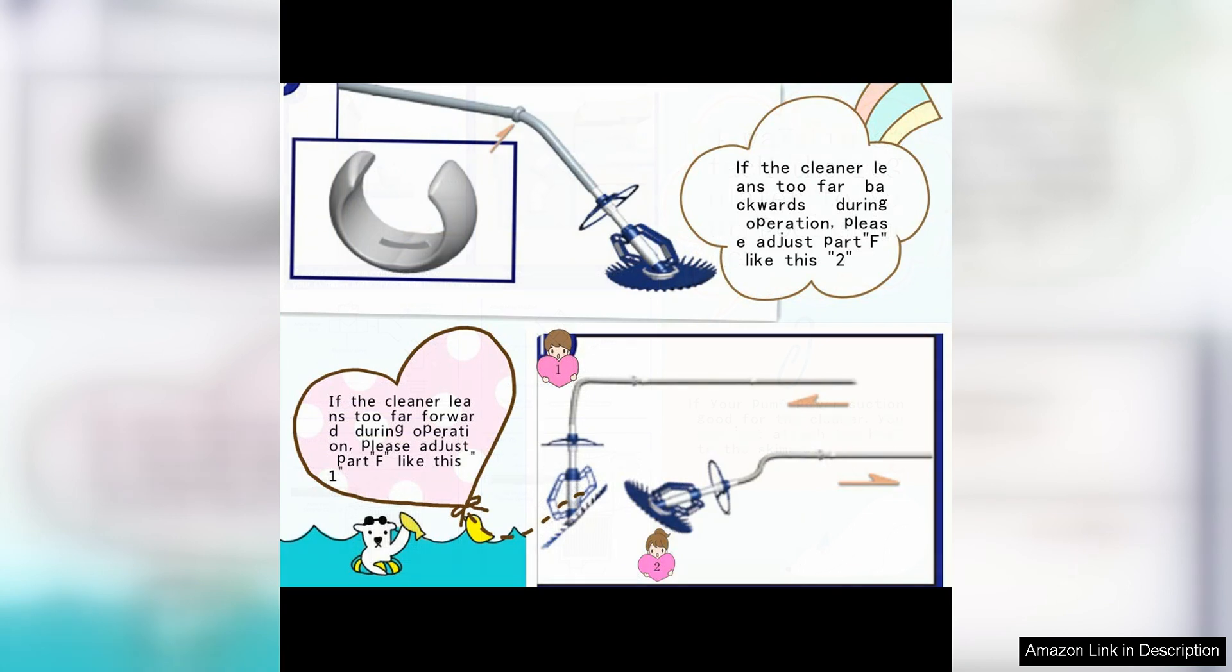Additionally, this pool vacuum cleaner is equipped with a powerful suction that effectively removes dirt, debris and algae from your pool. It comes with a large capacity filter bag that traps all the unwanted particles, leaving your pool clean and sparkling.